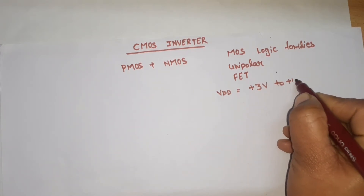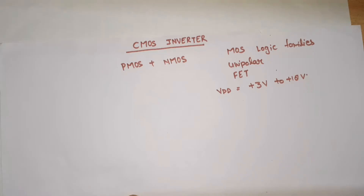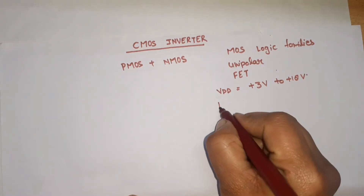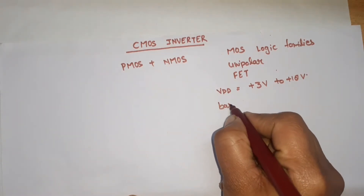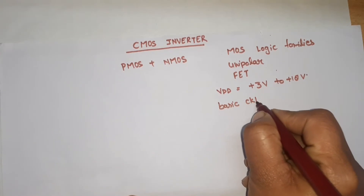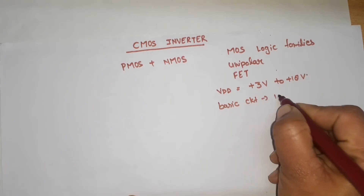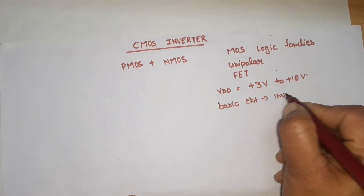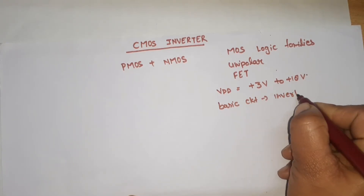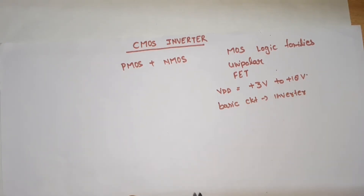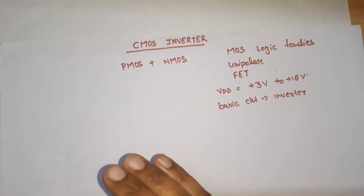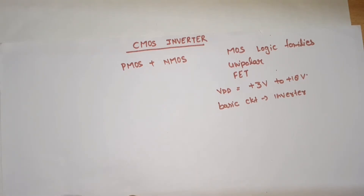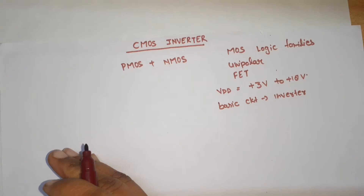Now for the basic circuit diagram, we will use an inverter — also known as a NOT gate. For the inverter, we will use both PMOS and NMOS connected together. I will draw the diagram first.